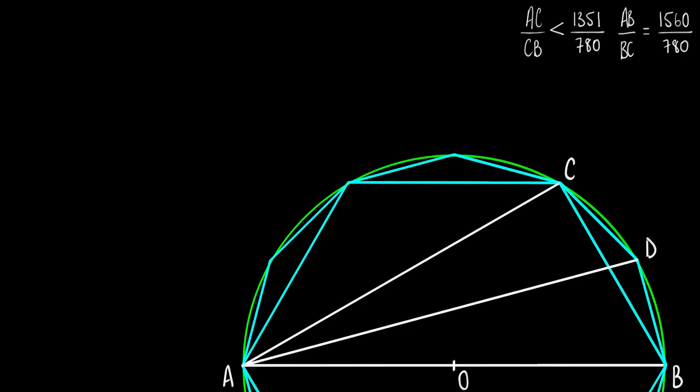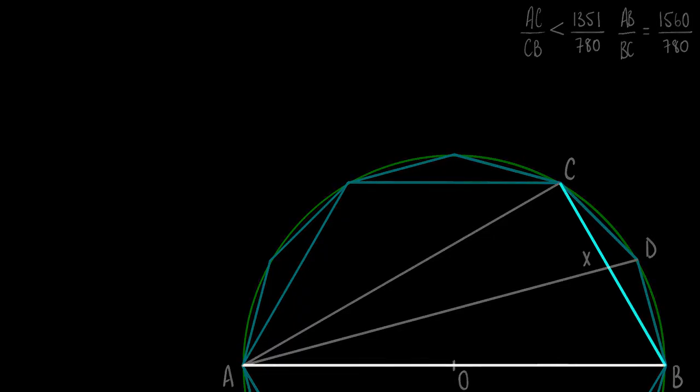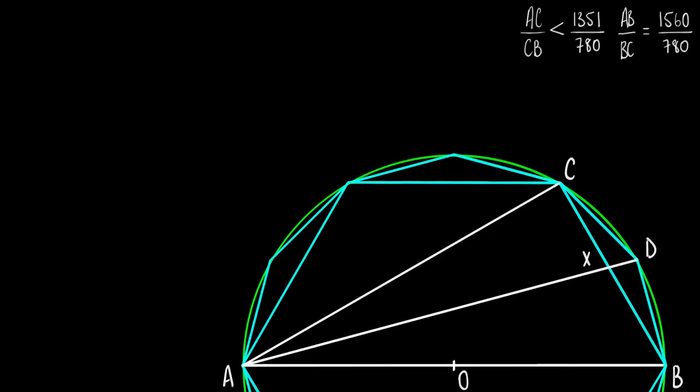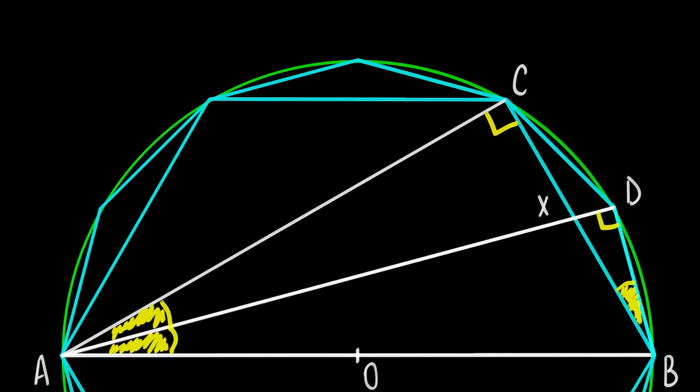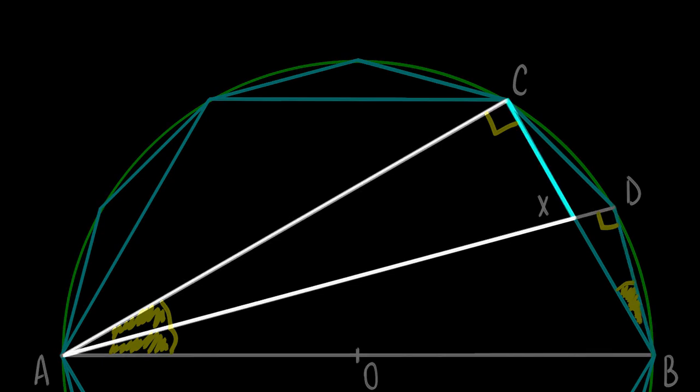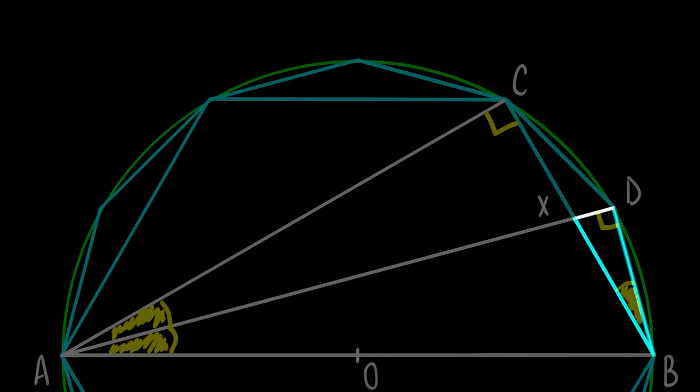Next, we bisect the angle CAB, creating AD and X where AD intersects with CB. And once again, we want to find the ratio that will take the place of our original ratio AB to BC, so that then we may restart the process. So now, angles BAD, XAC, and XBD are equal. And since angles BDA and BCA must be right angles, then triangles ADB, ACX, and BDX are similar.